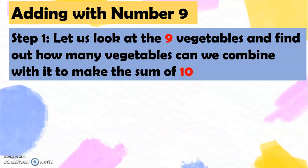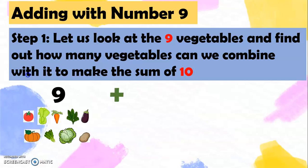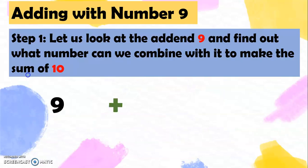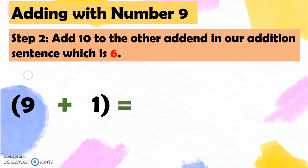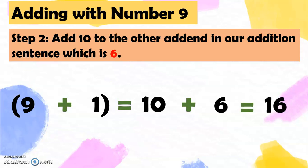Let's find out what number we can add with 9 to make 10. So we have 9 vegetables — how many vegetables will we add? Very good, one more. So 9 plus 1 equals 10. Now that we have 10, let's go to step 2: add 10 to the other addend in our addition sentence, which is 6. So we have 9 plus 1 equals 10, plus 6. And 10 plus 6 is? Very good, it's 16.